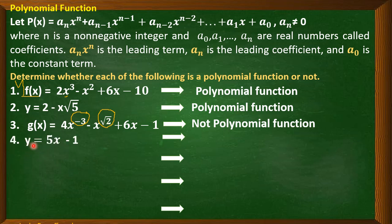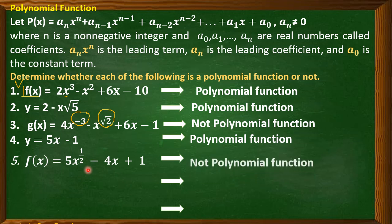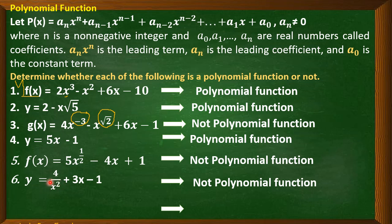Number four: y = 5x - 1. This is a polynomial function. Number five: f(x) = 5x^(1/2) - 4x + 1. This is not a polynomial function because of the exponent 1/2. Number six: y = 4/x² + 3x - 1. This is not a polynomial function because we cannot have a variable in the denominator.